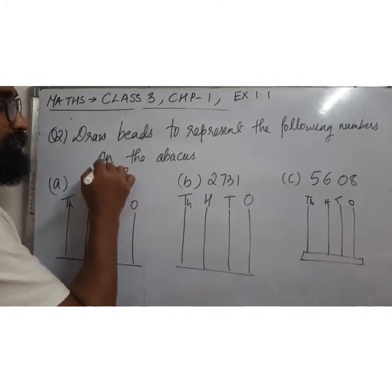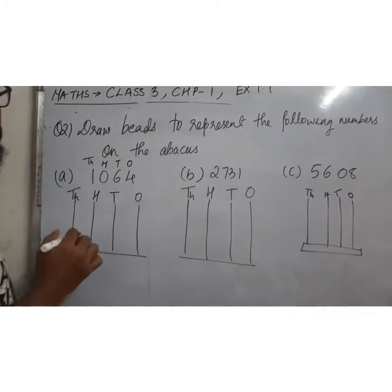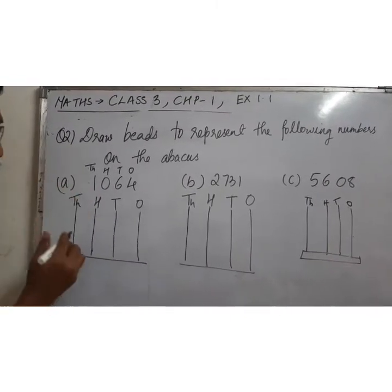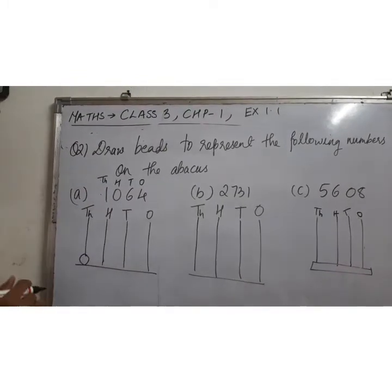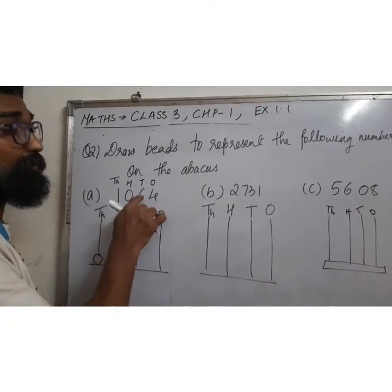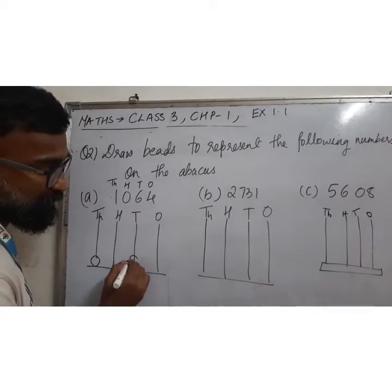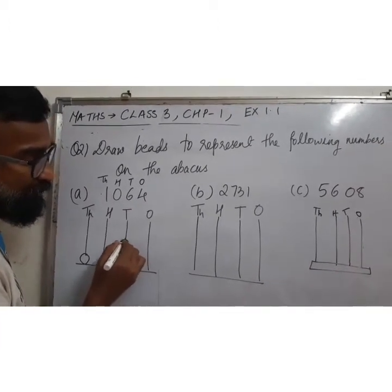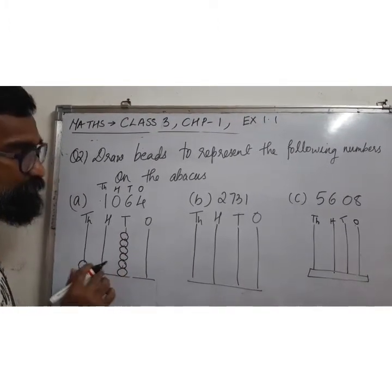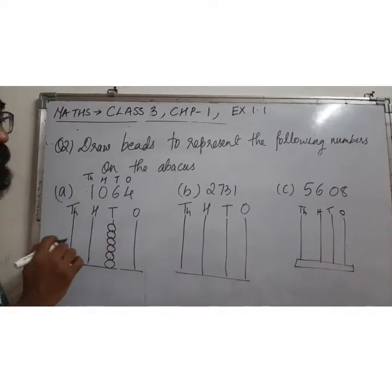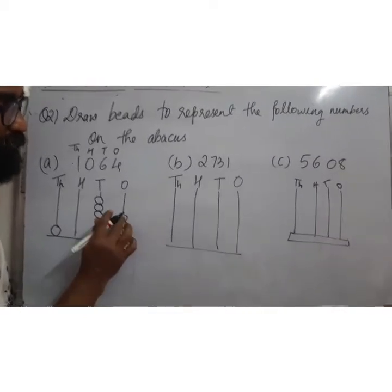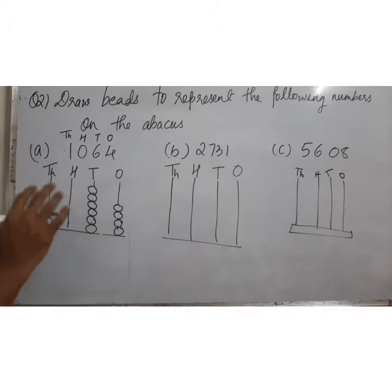Ones, tens, hundreds, thousands. So I'm going to register as 1,064. 1000 ke ghar pe which number is there? One. So I'm going to make 6 beats. I am sure this is very easy for you people.